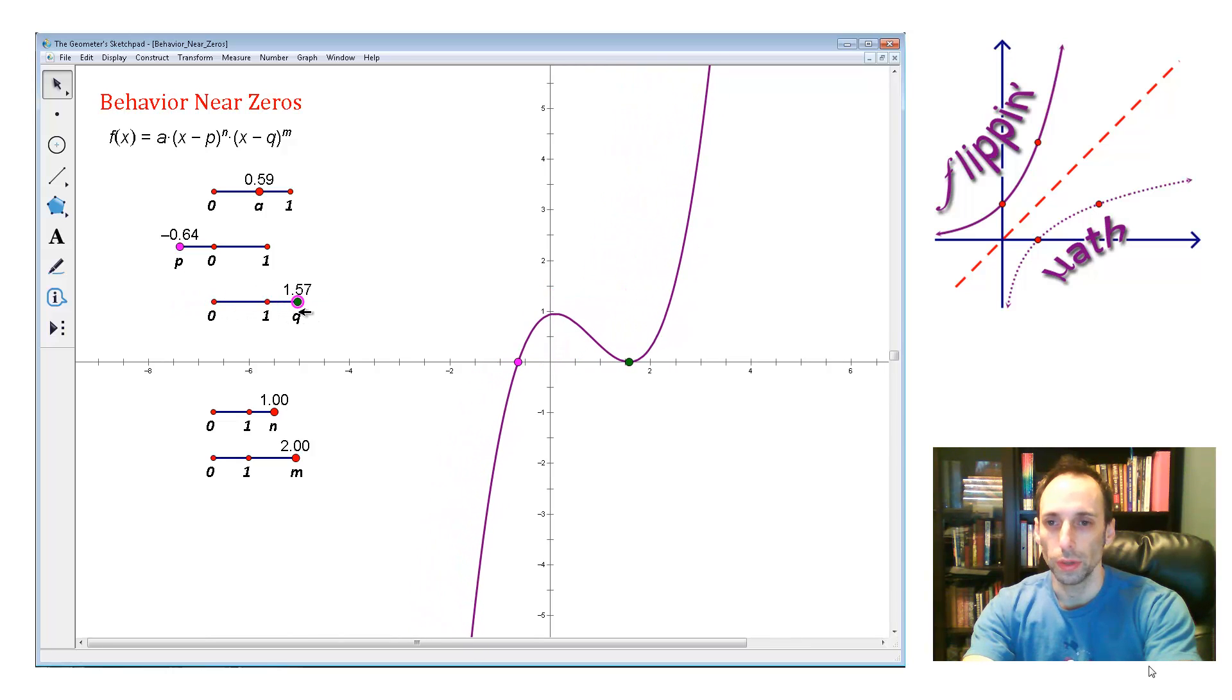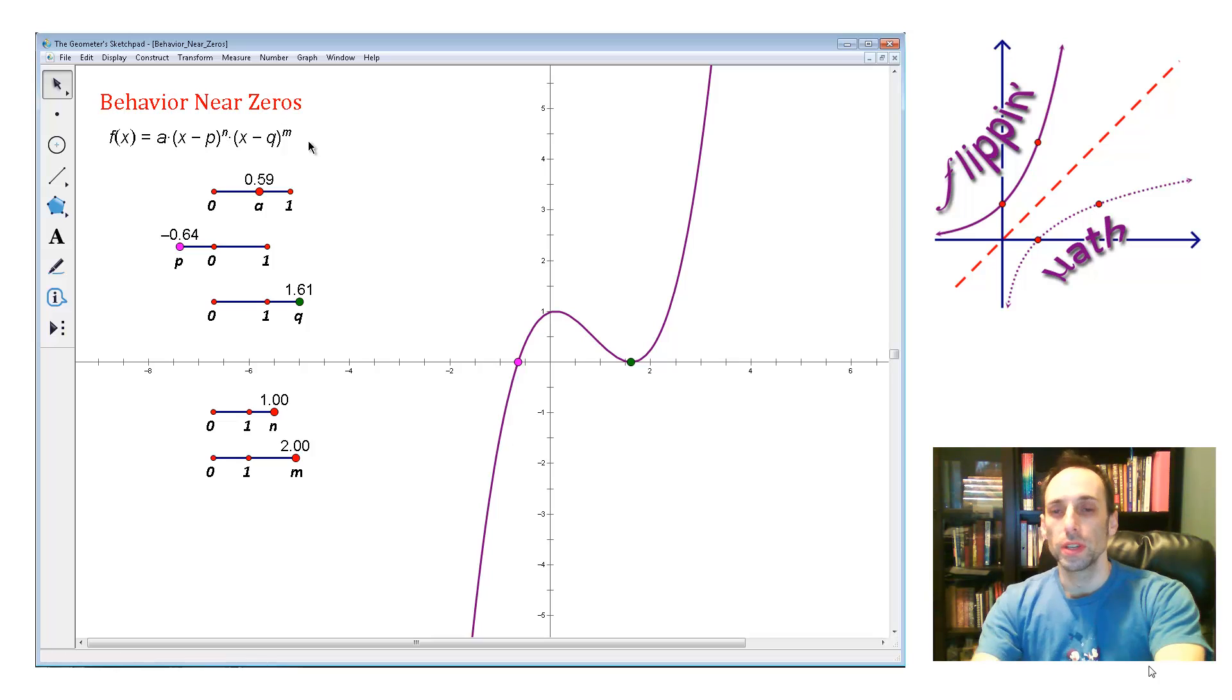And now each one of them is raised to a particular power. Now I set this up so that they would only stay integer powers, whole numbers actually, so that it stays a polynomial. So what I want you to notice is right now, n is at one, and it just crosses straight through. m is at two. It's an even number, and it's tangent there.